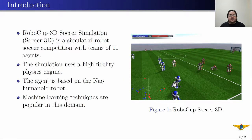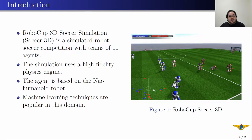Beginning with an introduction. RoboCup 3D Soccer Simulation, or Soccer 3D, is a simulated robot soccer competition with teams of 11 agents. As you can see here on the right, we have this simulation of a soccer field with humanoid robots as agents. The agent is based on a humanoid robot and the simulation uses a high-fidelity physics engine which simulates rigid body dynamics precisely.